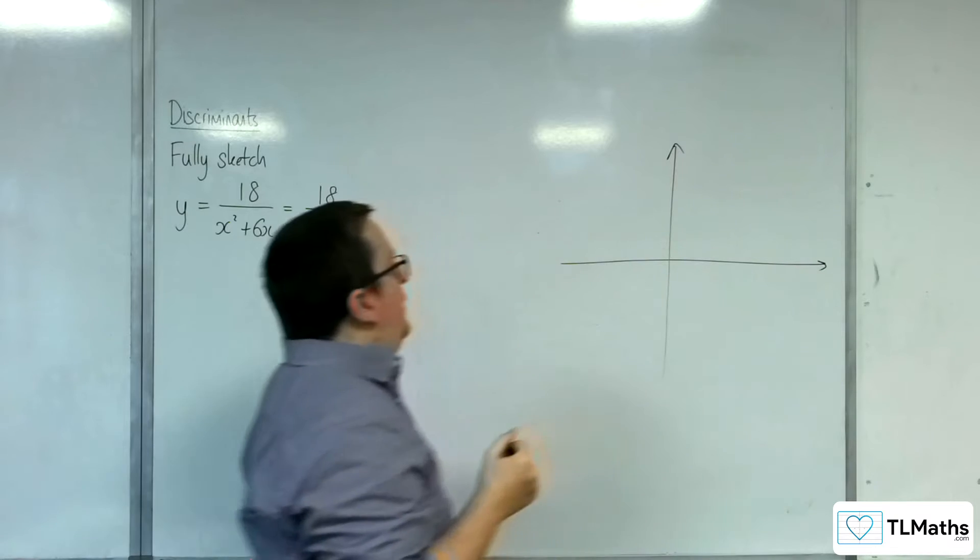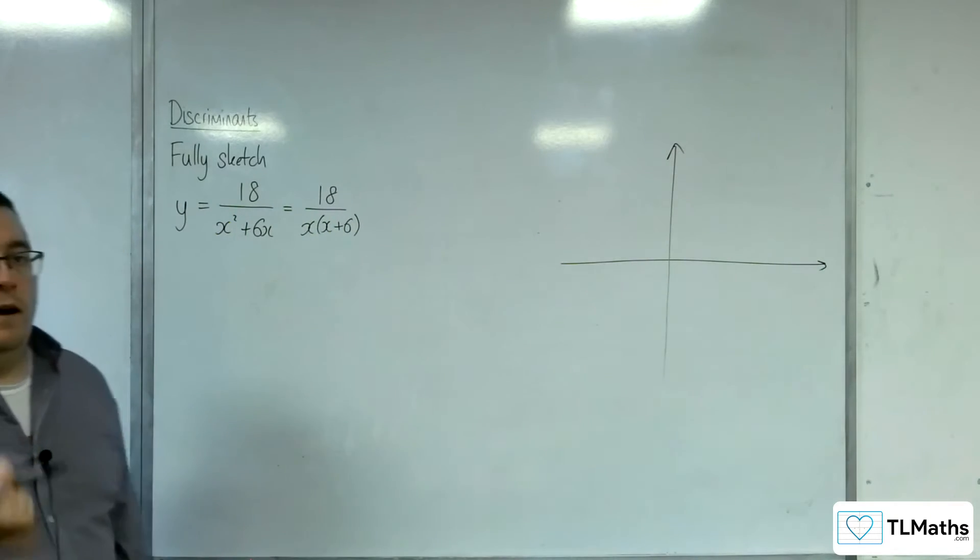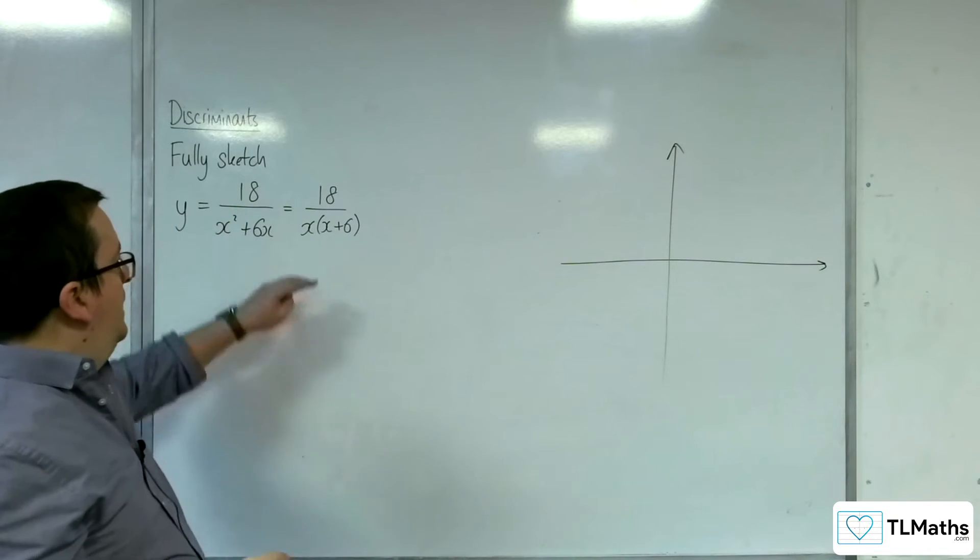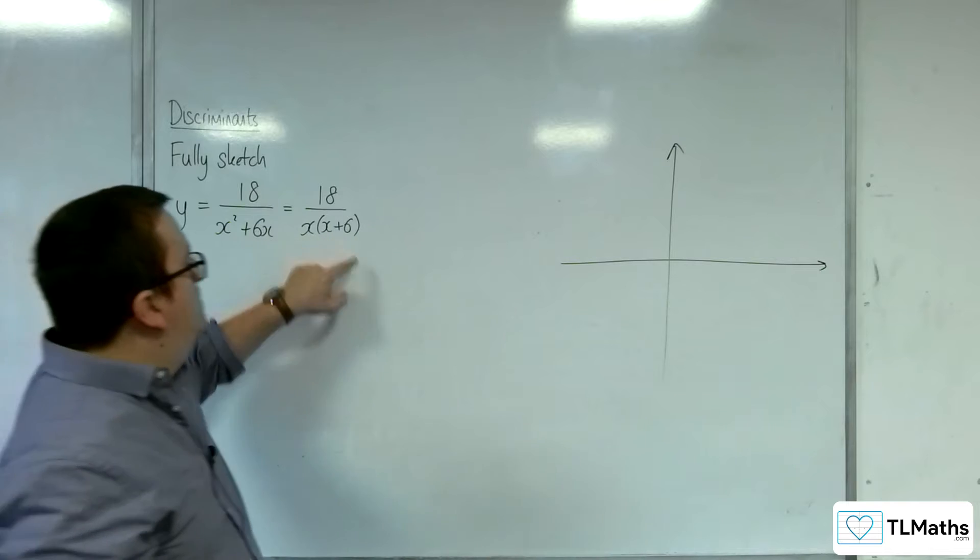So first things first, where are the vertical asymptotes? That's when the denominator is 0, so it's 0 and minus 6.